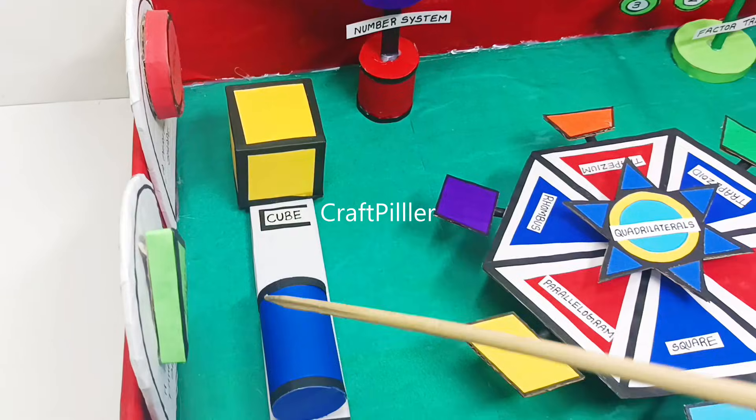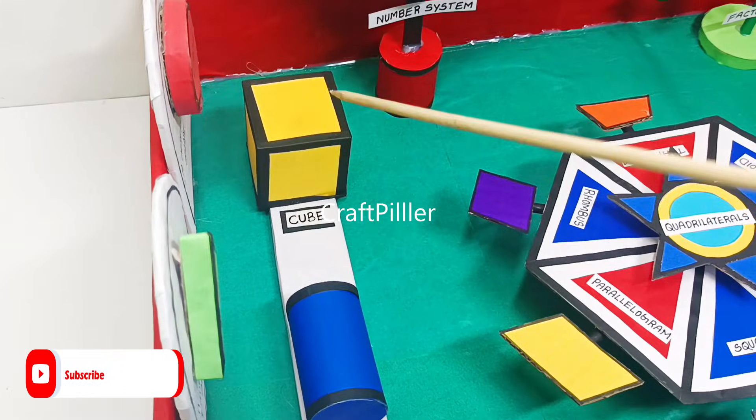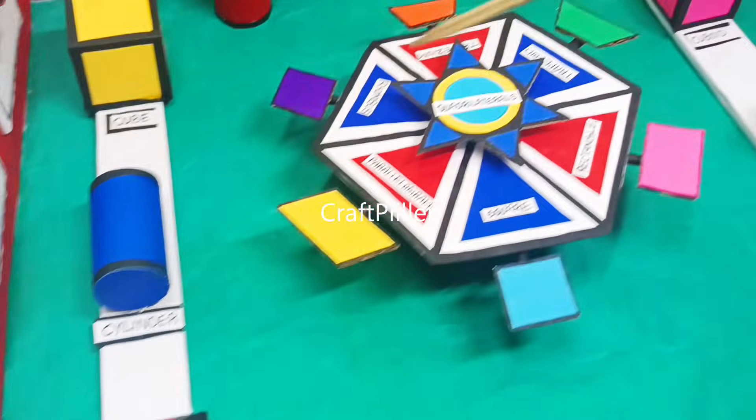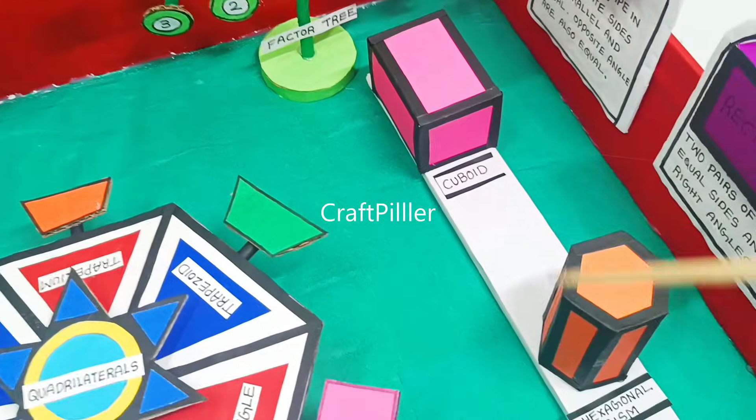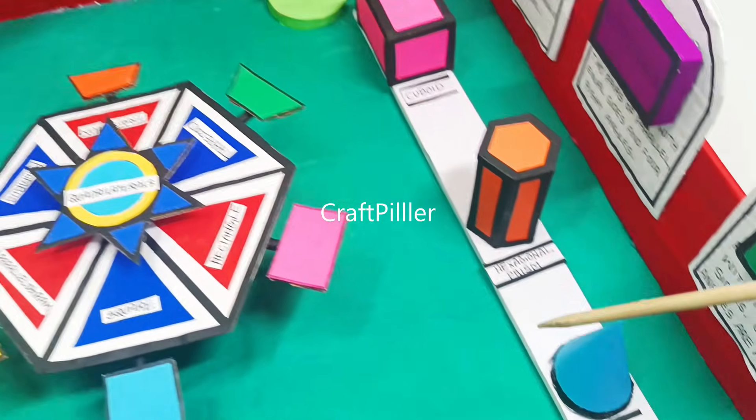Here we have showcased the cube, the cylinder, and pyramid. On the other side we have showcased cuboid, hexagonal prism, and cone. These are the six 3D shapes we have showcased in this math park.